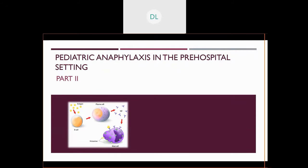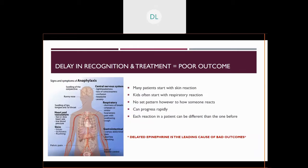Let's talk about recognition and treatment of anaphylaxis in the pediatric patient. Many patients will start off with a skin reaction. Kids will oftentimes start off with a respiratory reaction first — they may start coughing, get tachypneic, start wheezing, or have a prolonged expiratory phase. However, there's no real set pattern to anaphylaxis, and not only that, there's no real set pattern for each patient, meaning each time they have an allergic reaction, it can be different than the one before.